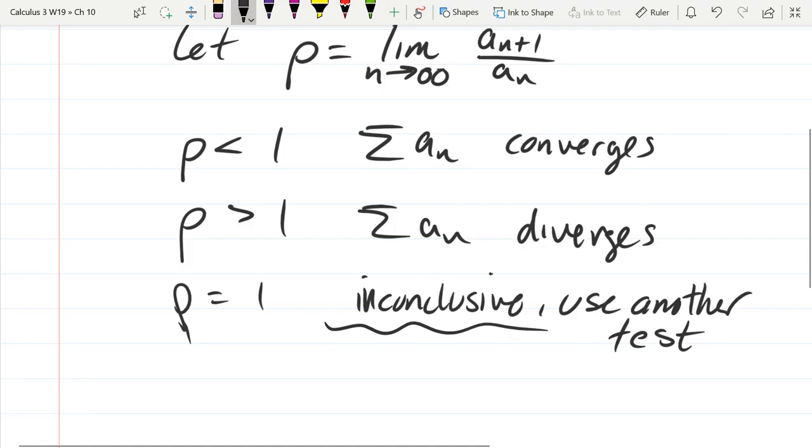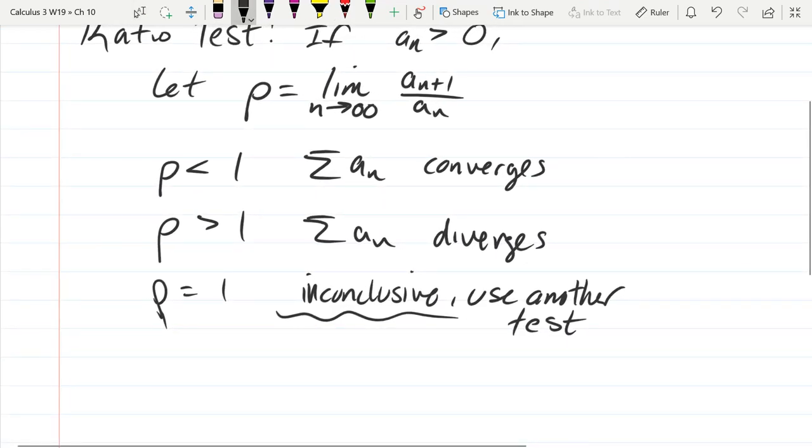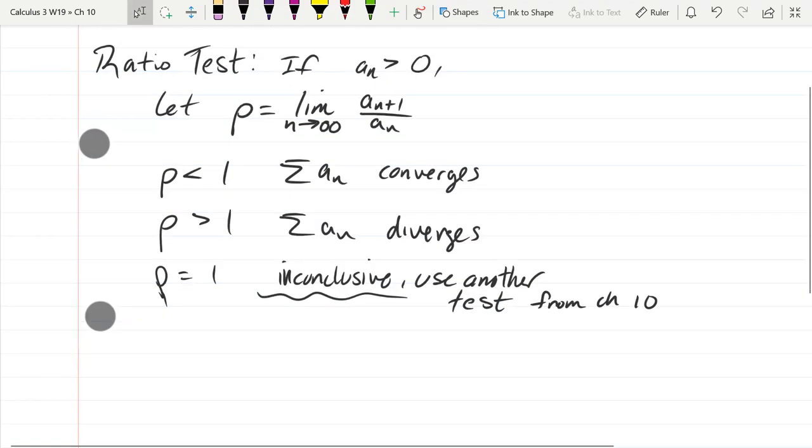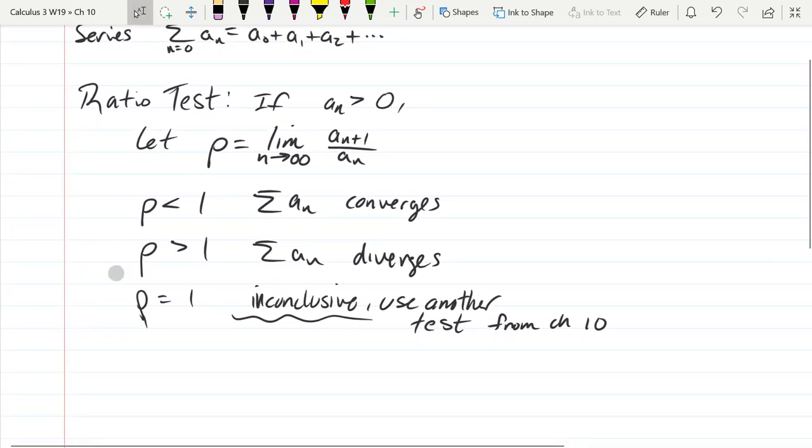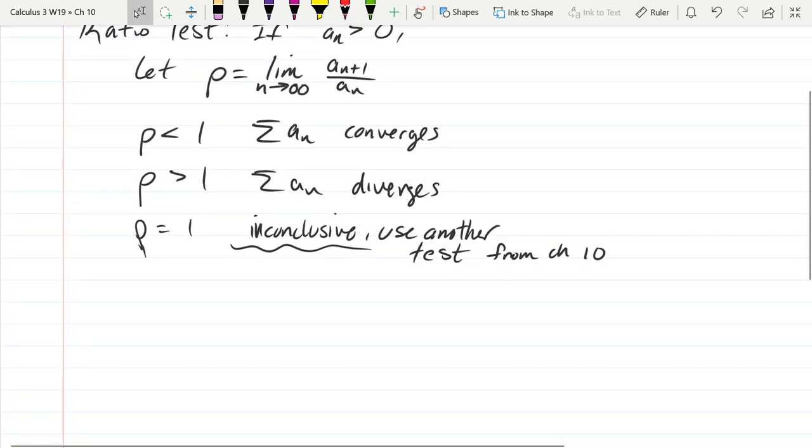So this is just the ratio test right here. So if you get ρ equals one, inconclusive, use another test. You will find that at the end points, you're going to have inconclusiveness, and you're going to have to use another test. An integral test if I didn't say that one. So you're going to have to use, on the homeworks, another test from chapter 10. And every reference I make to chapters and sections is going to be that same 12th edition calculus book. So that was basically a summary of chapter 10 up to power series. So now we're going to look at power series. That was a regular series up there. So now we're going to look at a power series.